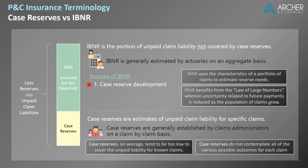Essentially, IBNR benefits from the law of large numbers, wherein uncertainty related to future payments is reduced as the population of claims grows.